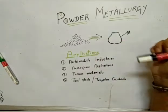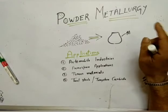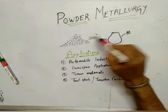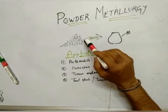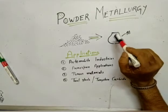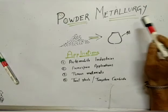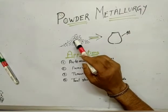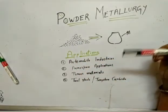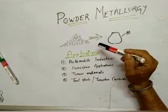It may seem very simple that we take some metallic powder and convert it into our desired workpiece, but things are not so simple. Between converting metallic powder to the final workpiece there are a number of steps involved, which I will show you in this video. Even creating the metallic powders is not an easy job — there are a number of ways by which we can create them.